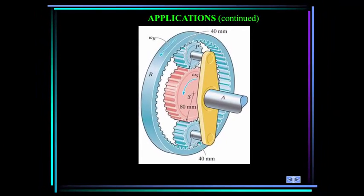Here's a planetary gear system used in many automobile transmissions. By locking or releasing different gears, this system can operate the car at different speeds. How can we relate the angular velocities of the various gears in the system?